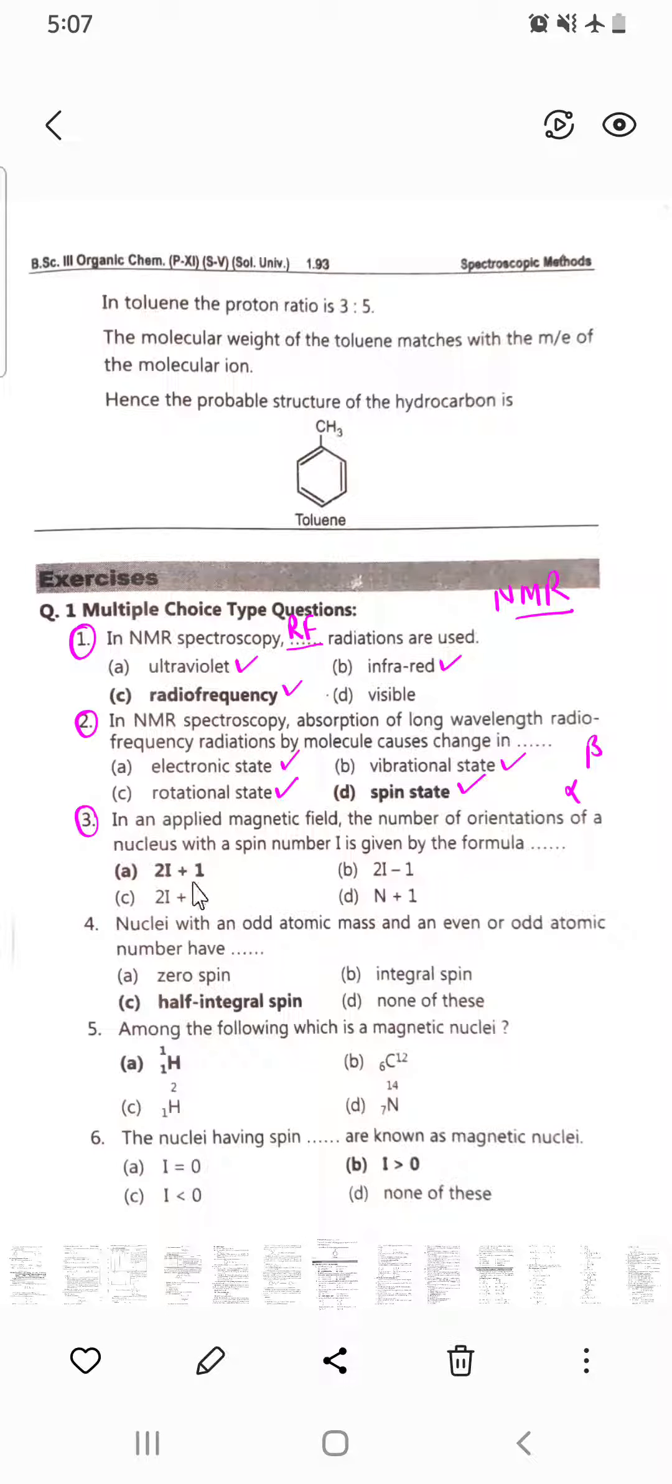2I plus 1. If the value of I is given, then we can calculate the number of orientations of that nucleus. Remember: 2I plus 1.